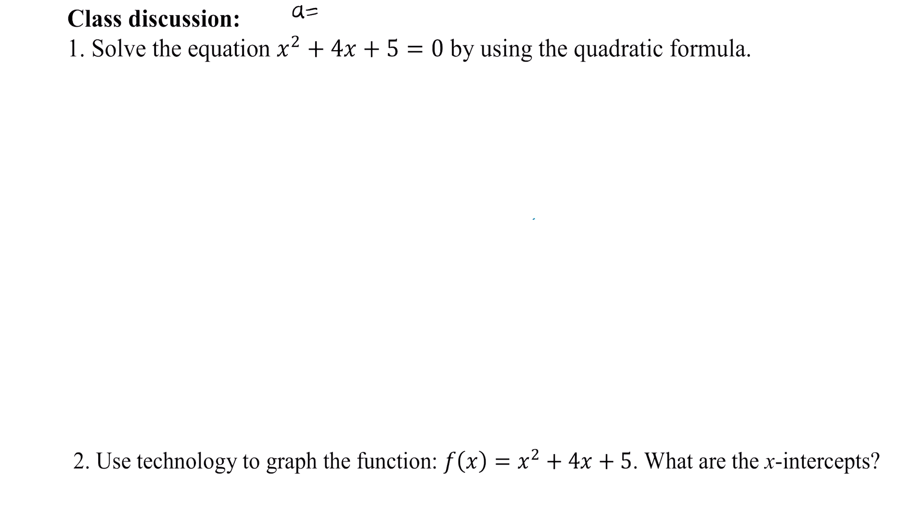So in this case, a equals 1, b equals 4, c equals 5. So we end up with x equals negative 4, plus or minus the square root of 4 squared, minus 4 times 1 times 5, and this entire quantity divided by 2 times 1.